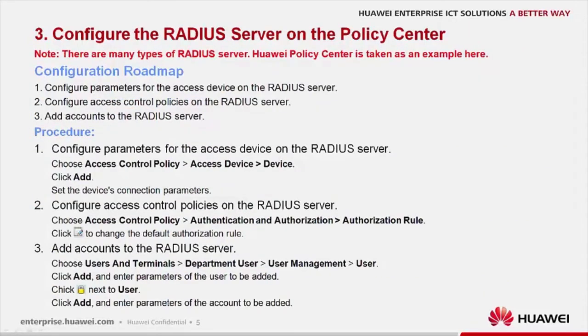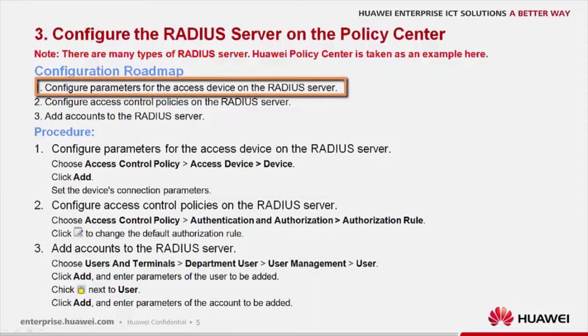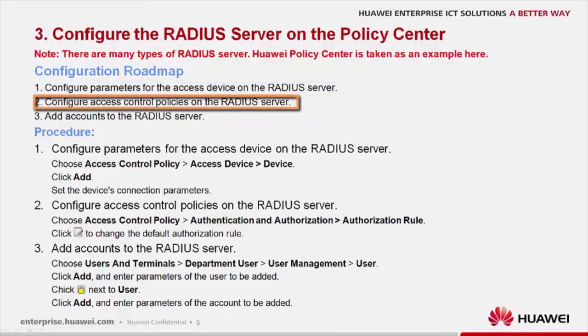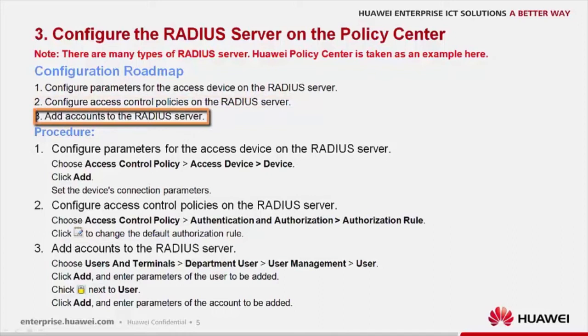Let's continue to talk about how to configure the RADIUS server. Taking Huawei Policy Center as an example, the RADIUS server configuration involves three steps: step one, configure parameters for the access device in the RADIUS server; step two, configure access control policies on the RADIUS server; step three, add accounts to the RADIUS server.